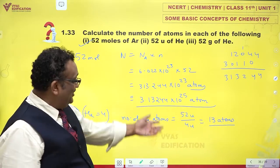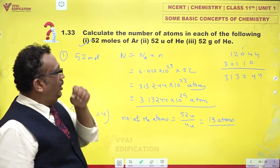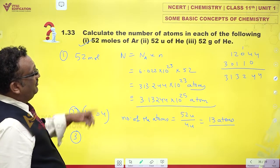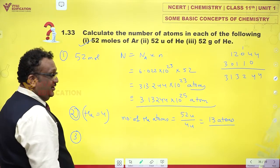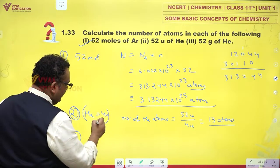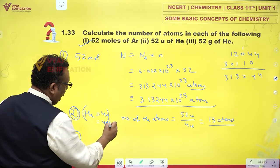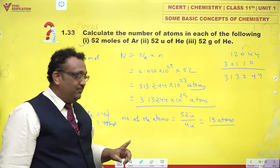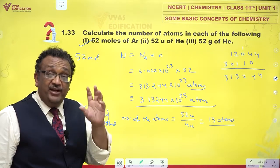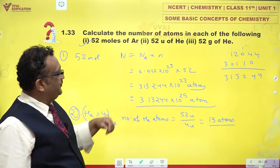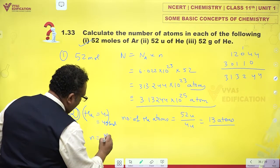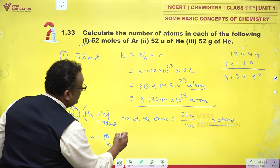And third, 52 grams of helium. Helium is 4 amu, yes it is also 4 grams per mole. If I take atoms, mass is in amu. If I take moles, mass is in grams. So moles of helium is mass by molar mass which is 52 grams by 4 grams per mole, which is 13 moles.